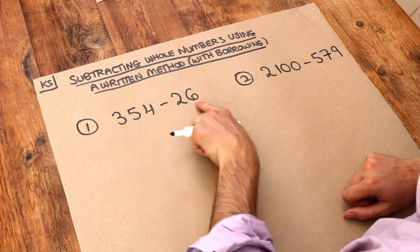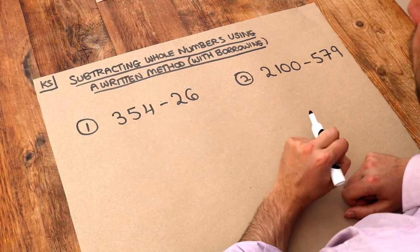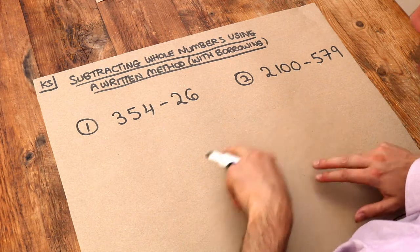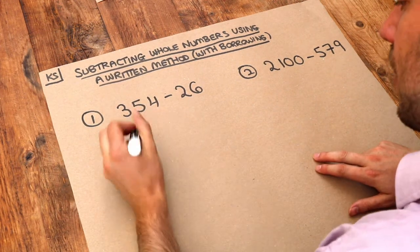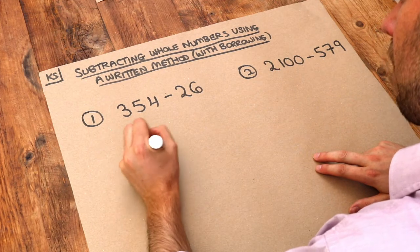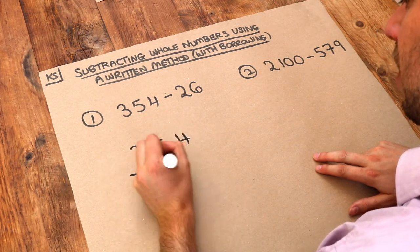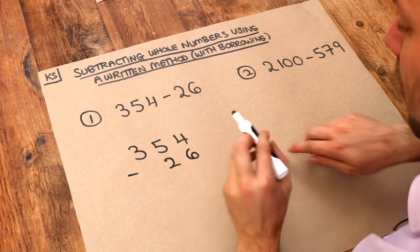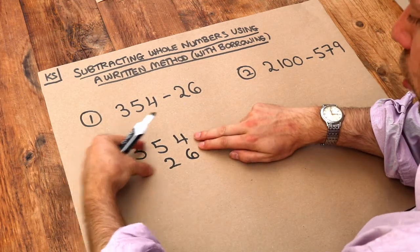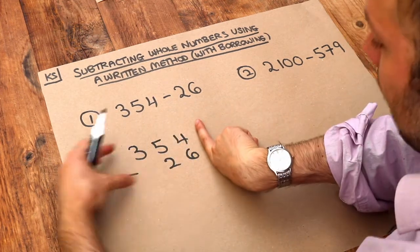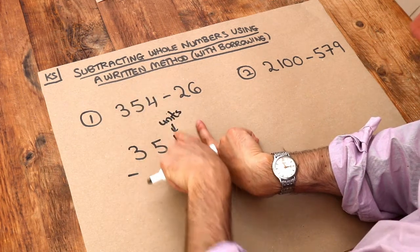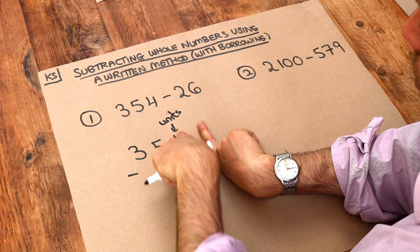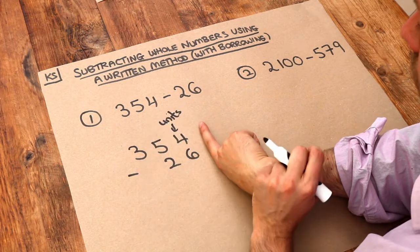In the previous video we saw how we can subtract numbers by column subtraction. What we do is write each number in one row, so we got 354 minus 26. Remember that we line up the numbers, we push them to the right so if you imagine there's a line there, we push the numbers so that these units digits are in the same column and to the rightmost of the number.